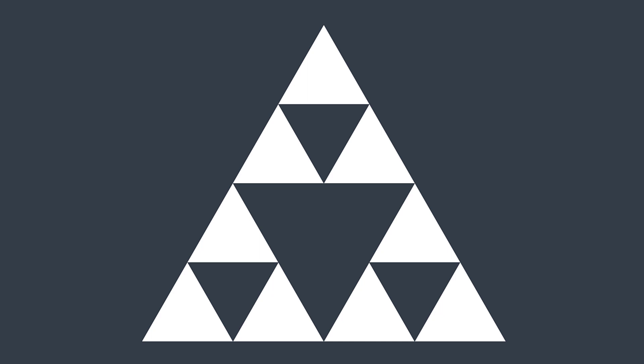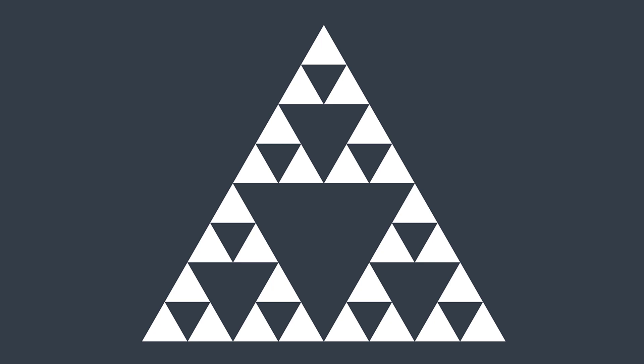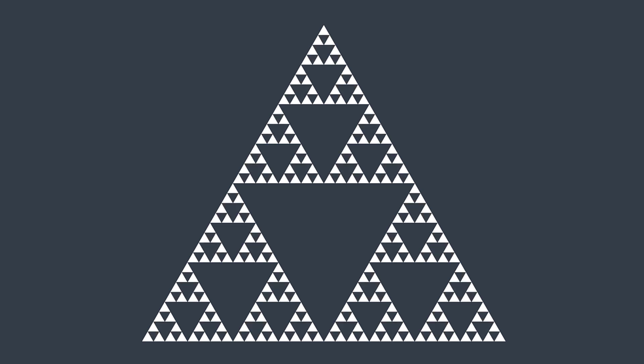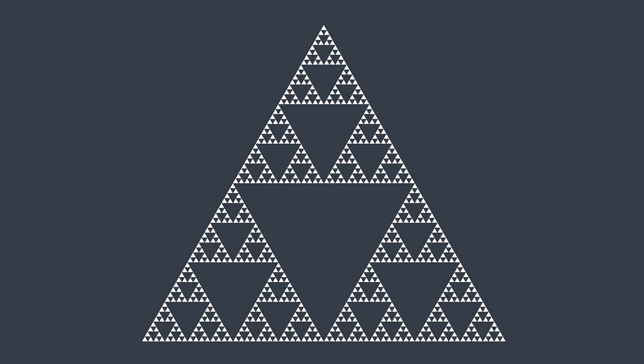Now for each one of their sub-triangles, repeat the same thing. If you continue like this to infinity, you get this fractal shape named the Sierpinski triangle.